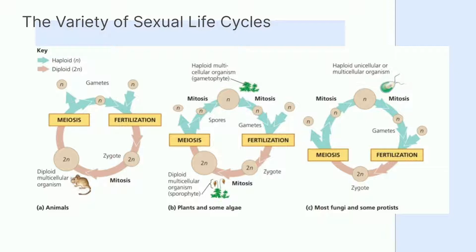Pada tumbuhan dan beberapa alga, terdapat pergantian generasi. Life cycle-nya melalui diploid dan haploid multiseluler stage. Diploid organisme disebut sporofit. Sporofit akan mengalami proses meiosis dan membentuk haploid spores. Haploid spores akan berkembang menjadi organisme yang disebut gametofit melalui proses mitosis. Gametofit jantan dan betina akan mengalami fertilisasi yang menghasilkan diploid sporofit kembali. Tumbuhan ini unik karena mengalami alternation of generation, di mana satu generasi haploid dan generasi selanjutnya diploid, begitu seterusnya.